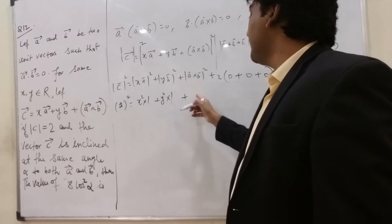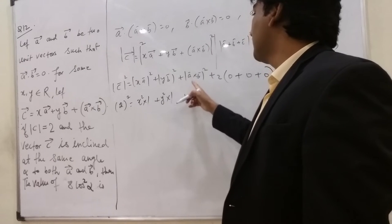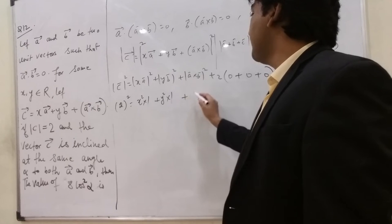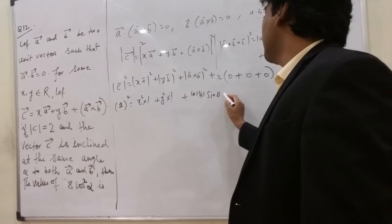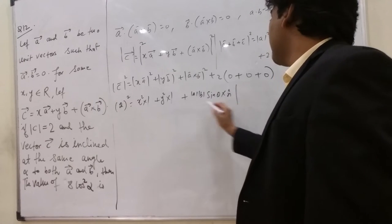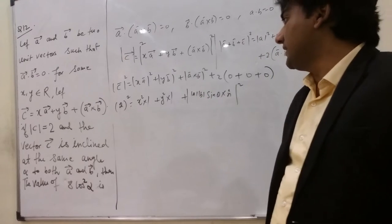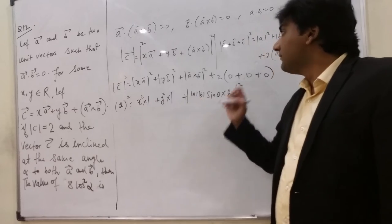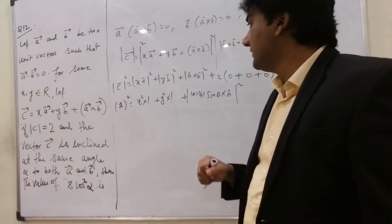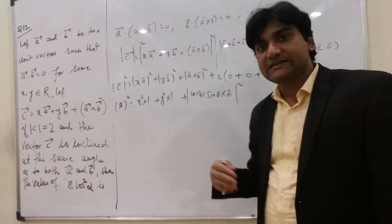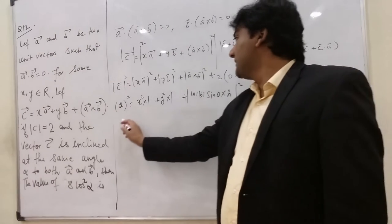And A cross B. So A cross B means mod A, mod B, sin theta, then n cap. For mod R square, this is 1, this is 1. By the way, A and B, A dot B is 0, it means A and B are perpendicular. So angle between them is 90 degrees.